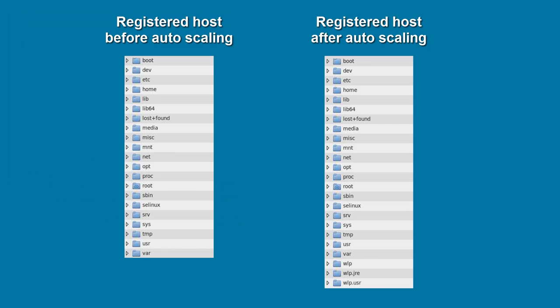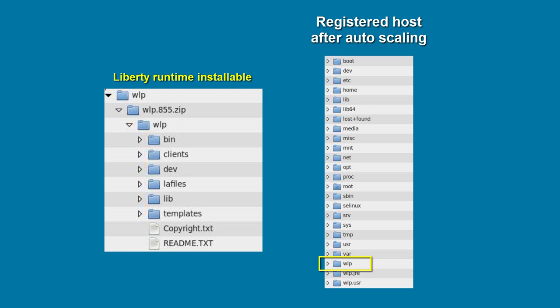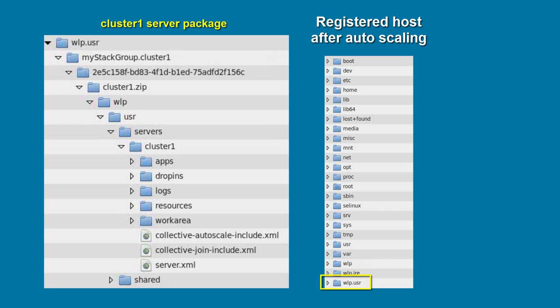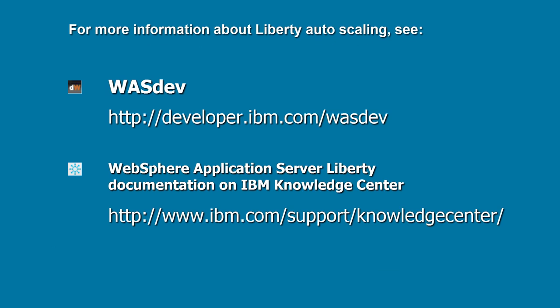The registered host now has the WLP, WLP.jre, and WLP.user directories for the Liberty Runtime and JRE installables and cluster1 server package. For more information about auto-scaling in Liberty Profile, see WASDEV.net and the Liberty Profile documentation on IBM Knowledge Center.